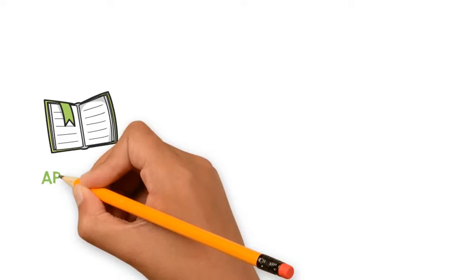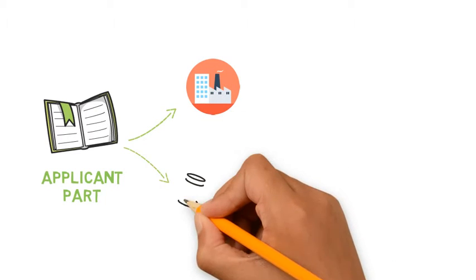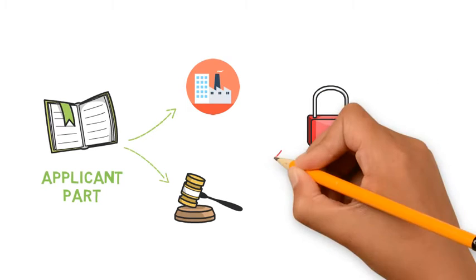This section is divided in Applicant Part, which is shared with clients and regulatory agencies, and Restricted Part, which is usually shared only with regulatory agencies, since it may include more sensitive information about the API manufacturer.